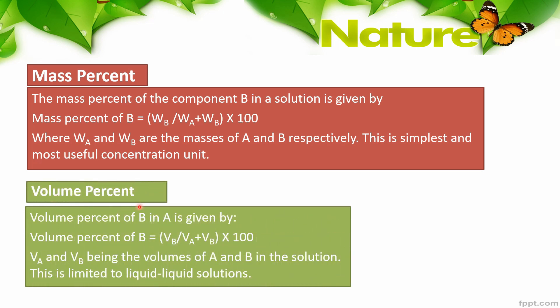Then we have volume percent. If we need to find the volume percent of B in A, we measure the volume of B, divide it by the total volume of the solution, and multiply by 100. The total volume of solution is V_A plus V_B. Volume percent is limited to liquid-liquid solutions only — systems where both the solute and solvent are in liquid form.